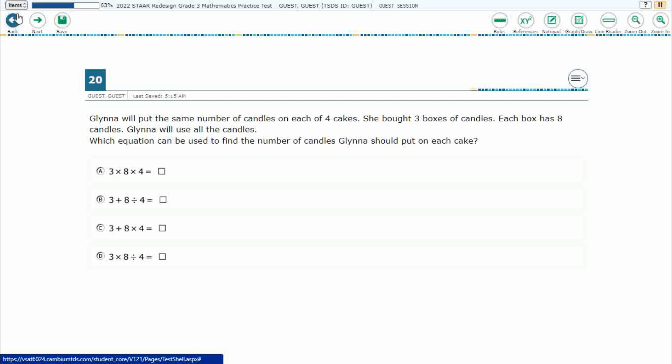So Glenna will put the same number of candles into each of four cakes, bought three boxes of candles, each box has eight candles. Glenna will use all the candles and what equation can we use? Holy cow, we've got candles, boxes, and cakes.